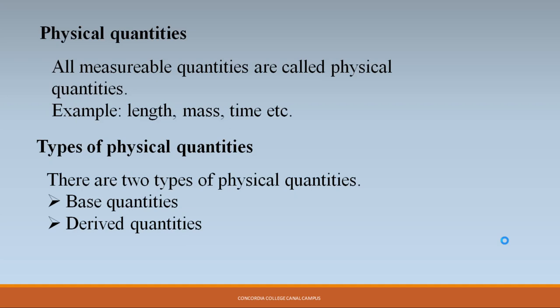Now let's discuss physical quantities. All measurable quantities are called physical quantities — those which we can measure. For example, length is a physical quantity; we can measure it in meters. Similarly, mass and time are physical quantities which we can easily measure.